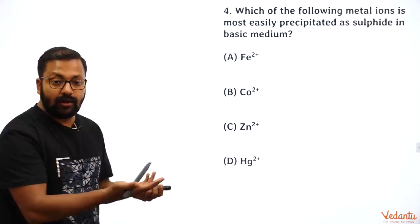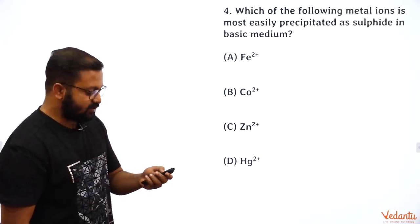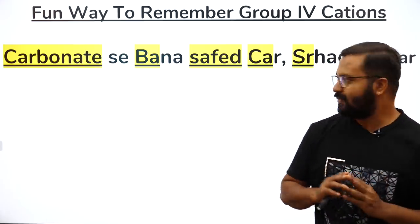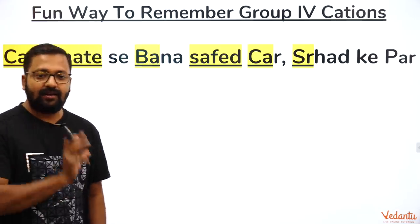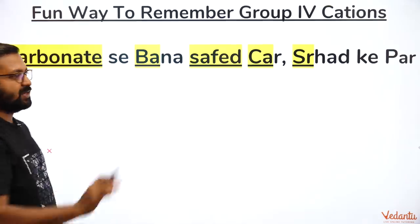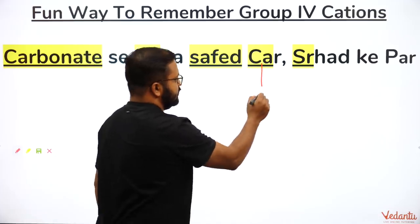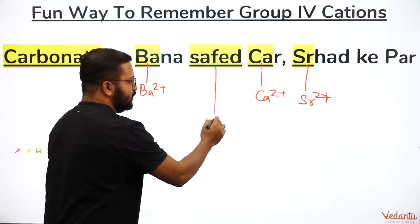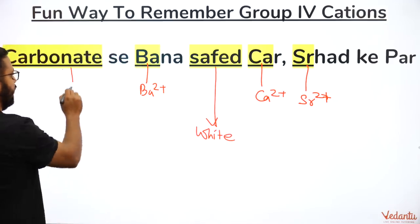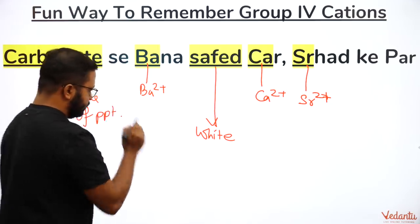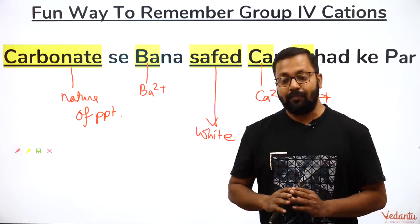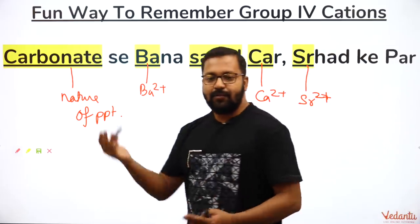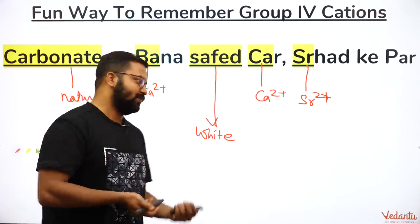A quirky rule for Group 4 (some books call it Group 5): 'Carbonates se bana safed — car sarhad ke par.' All these cations are precipitated as their carbonates, and the color of precipitate is white. The ions are Ba²⁺, Ca²⁺, and Sr²⁺. These rules help you remember all the cations in salt analysis — please practice and discuss with friends.